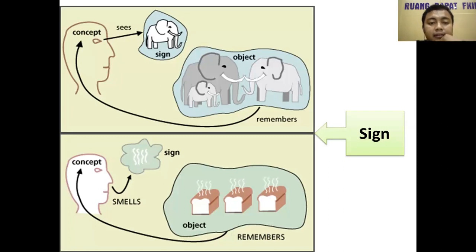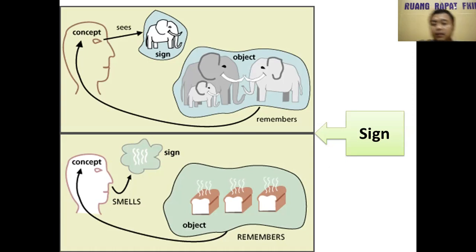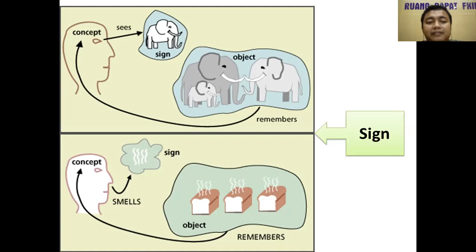We get meaning through experience. If someone has never seen an elephant before, they cannot recognize that it is an elephant. We recognize it because we have seen it — directly in a zoo or on television. But if someone has never encountered it in their life, they cannot recognize it. This is the process of how we get signs and meaning.